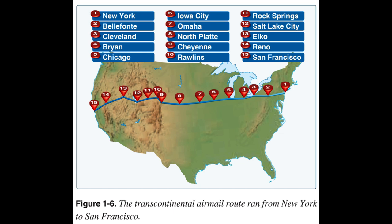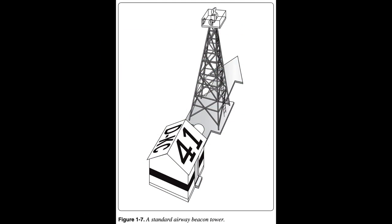The Department of Commerce created a new aeronautics branch whose primary mission was to provide oversight for the aviation industry. In addition, the aeronautics branch took over the construction and operation of the nation's system of lighted airways, which the Postal Service had initiated as part of the transcontinental airmail route system. The Department of Commerce made significant advances in aviation communications, including the introduction of radio beacons as an effective means of navigation. Built at intervals of approximately 10 miles apart, the standard beacon tower was 51 feet high and was topped with a powerful rotating light. Below the rotating light, two course lights pointed forward and back along the airway. The course lights flashed a code to identify the beacon's number. The tower usually stood in the center of a concrete arrow 70 feet long. A generator shed, where required, stood at the feather end of the arrow.